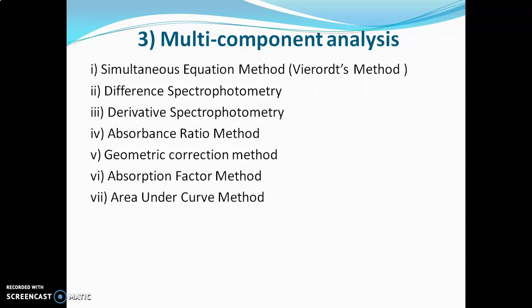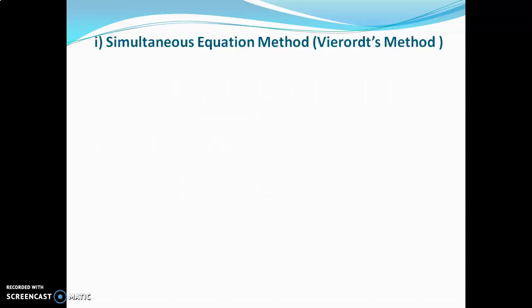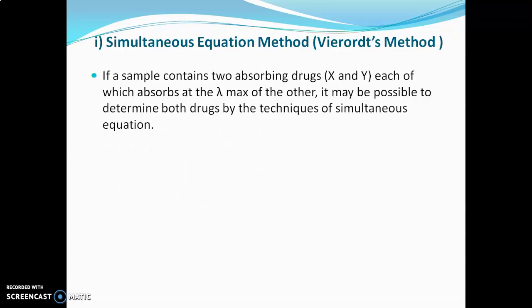We will go into detail on the first two methods. The first method is the simultaneous equation method. If the sample contains two absorbing drugs, X and Y, each of which absorbs at the lambda max of the other, it may be possible to determine both drugs by the technique of simultaneous equations, because it is difficult to analyze such a sample solution with a simple calibration curve method.